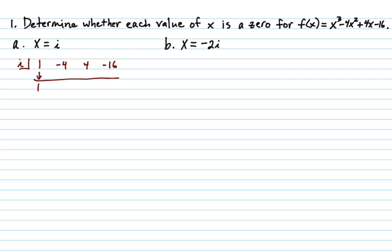And let's bring down our 1. Of course, 1 times i is i. Now remember, imaginary numbers with an i in them, they have a real part and an imaginary part. Negative 4 plus i, the way we would write that is just like what I just said, negative 4 plus i. We do the real part first, then the imaginary part.